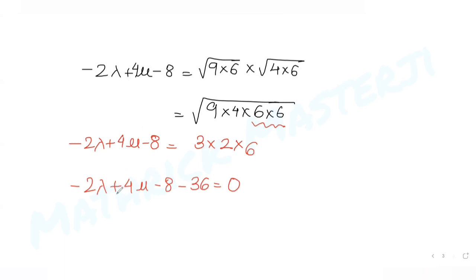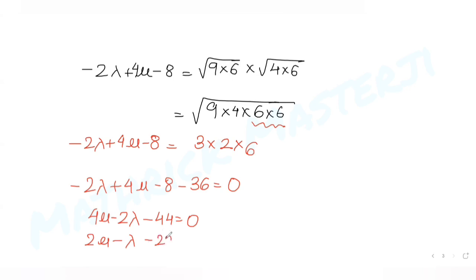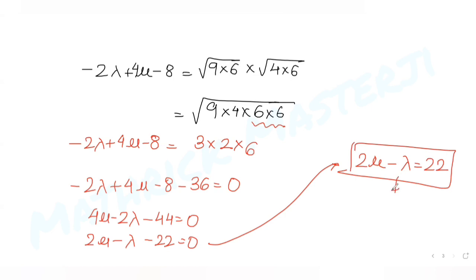From that we get: −2λ + 4μ − 8 = 36, which gives 4μ − 2λ = 44. Dividing throughout by 2: 2μ − λ = 22. That is our first equation in terms of μ and λ.